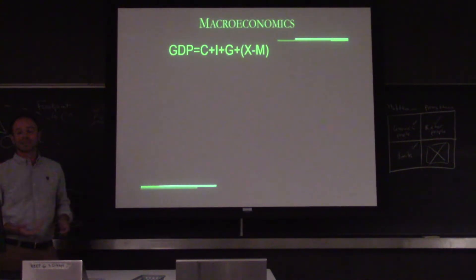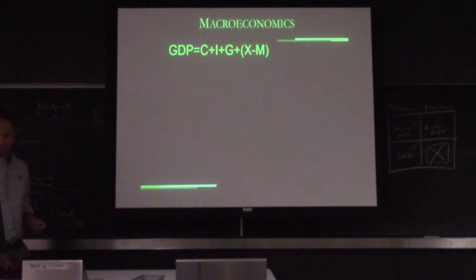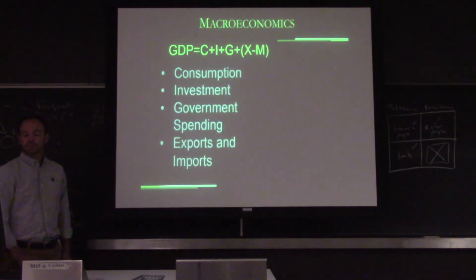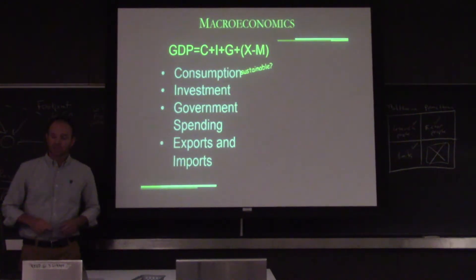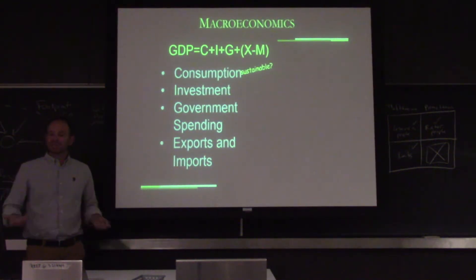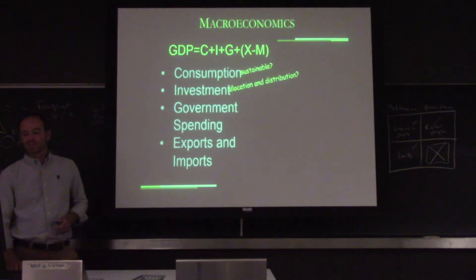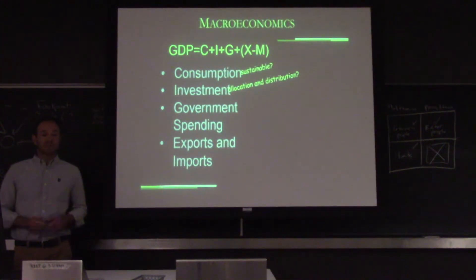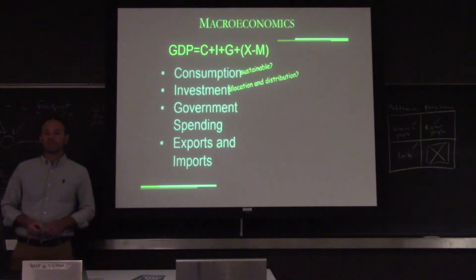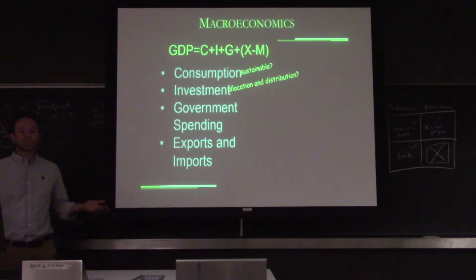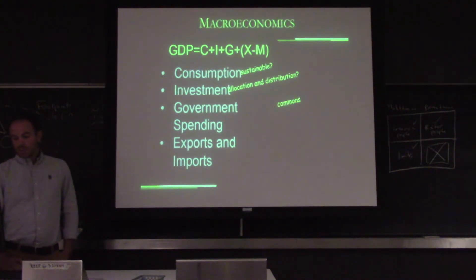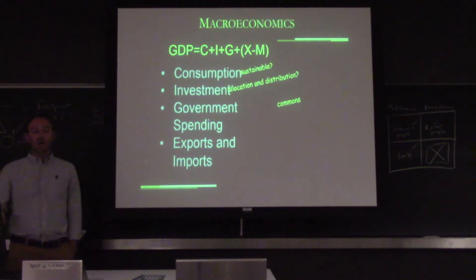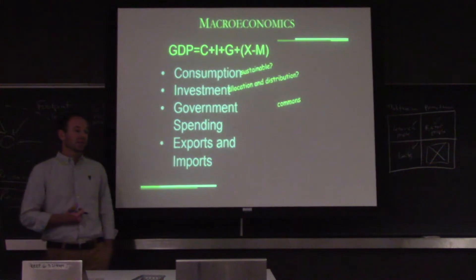So, macroeconomics. This is the classic macroeconomic model: GDP equals consumption plus investment plus government spending plus exports and imports. What we're starting to ask in ecological macroeconomics is, is this consumption sustainable? In the neoclassical school, any consumption is great and it adds to GDP. We start to say, is that a sustainable consumption model? When we invest, how is that investment allocated — is it investment in SUVs or in green energy? And how are we distributing that investment? We have a ton of investment now being funneled to the one-tenth of one percent — is that appropriate? What is the government spending on? What are those common pool resources and how are we maintaining our infrastructure in a way that is sustainable?